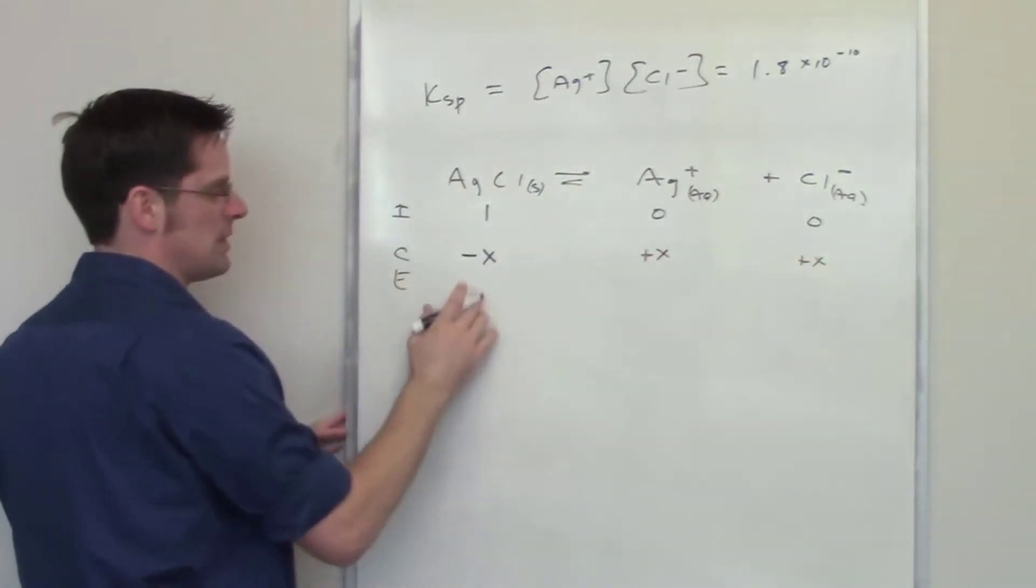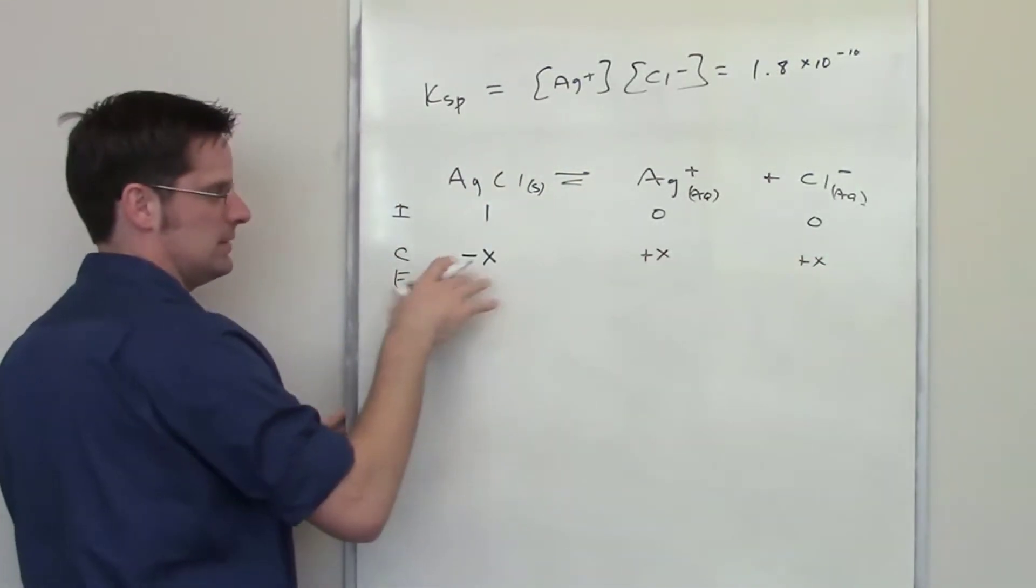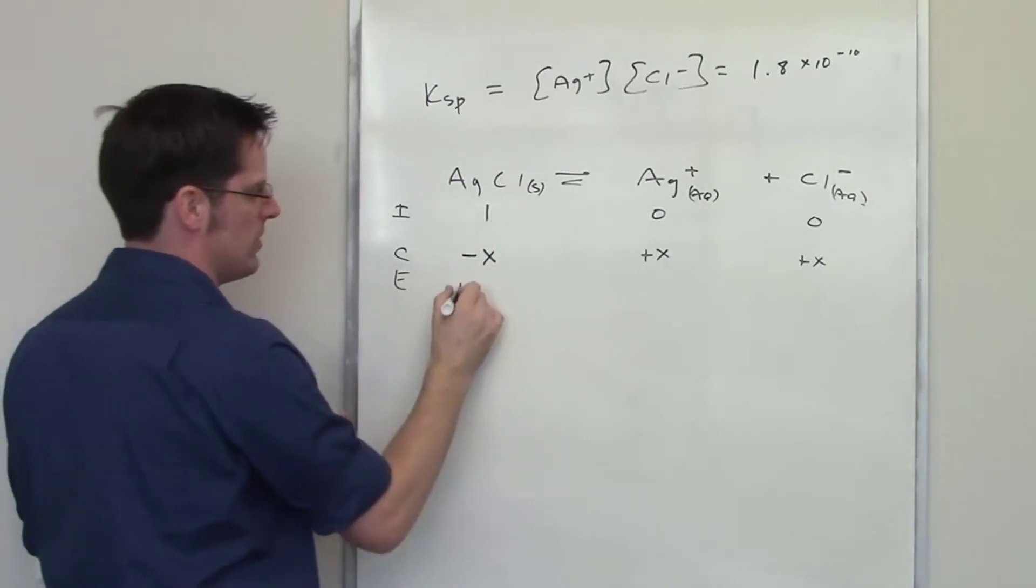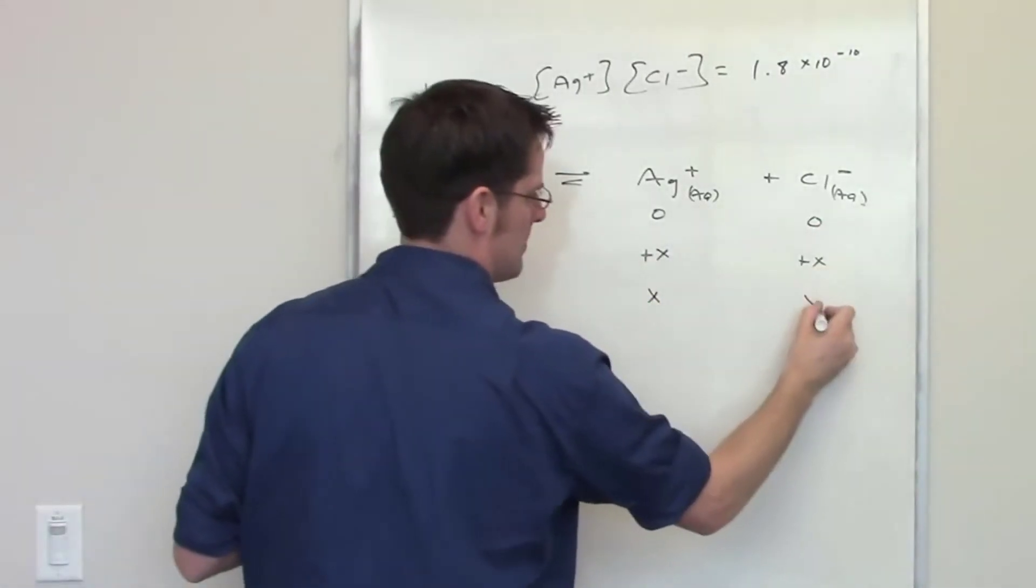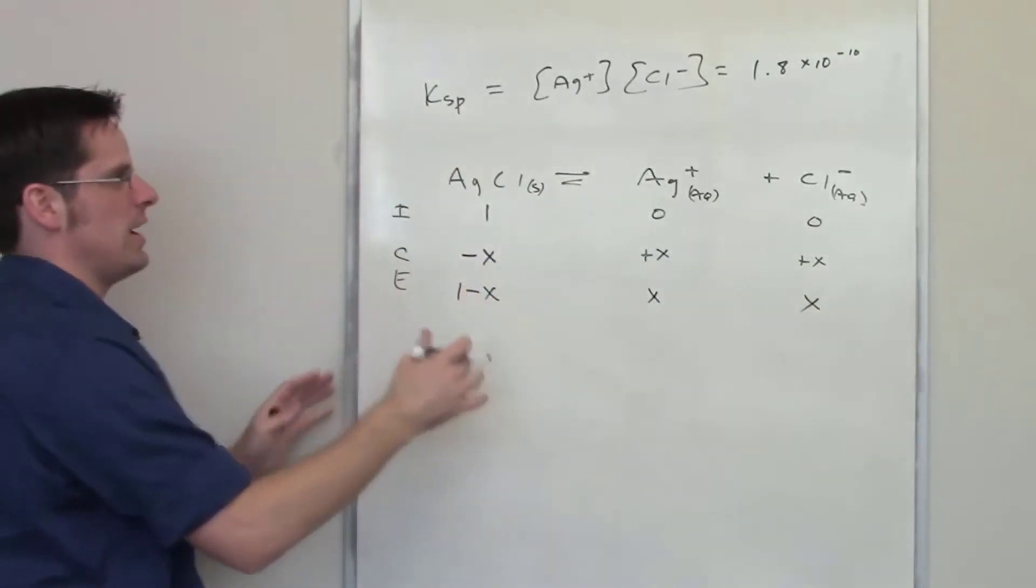Now the final equilibrium concentration that is going to be achieved by adding up rows 1 and 2, I've got 1 minus x here, 0 plus x or just x there, and the same thing over here.